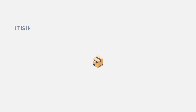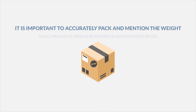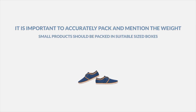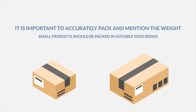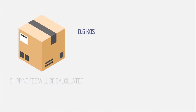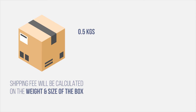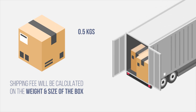Therefore, it is important to accurately pack and mention the weight of the products. If you are packing a small product, it is vital to pack it in a suitably sized box and not an oversized box. If you pack a small product which has a gross weight of 0.5 kg in a large box, then the shipping fee will be calculated according to the volumetric weight of the big box, as it will occupy a larger space in the transportation vehicle.